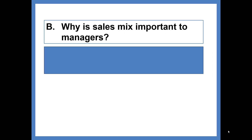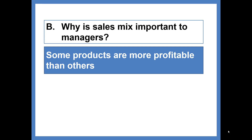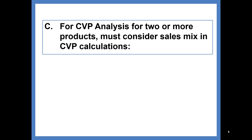Why is sales mix important? Simply put, it's because some products are more profitable than others. For our CVP analysis calculations, we must factor in the sales mix, but it really doesn't change our calculations very much.